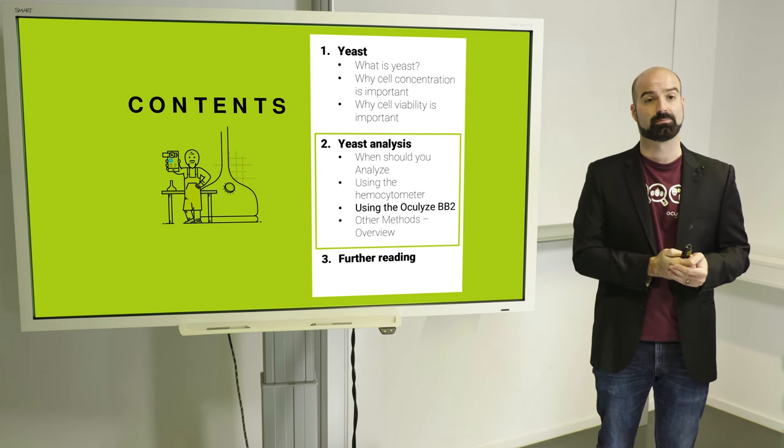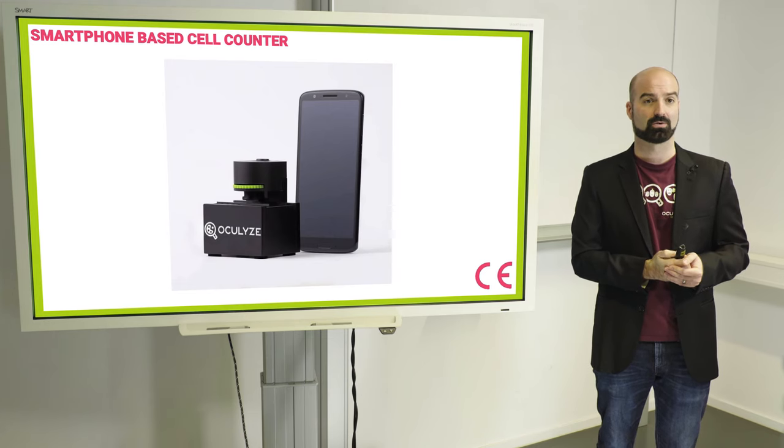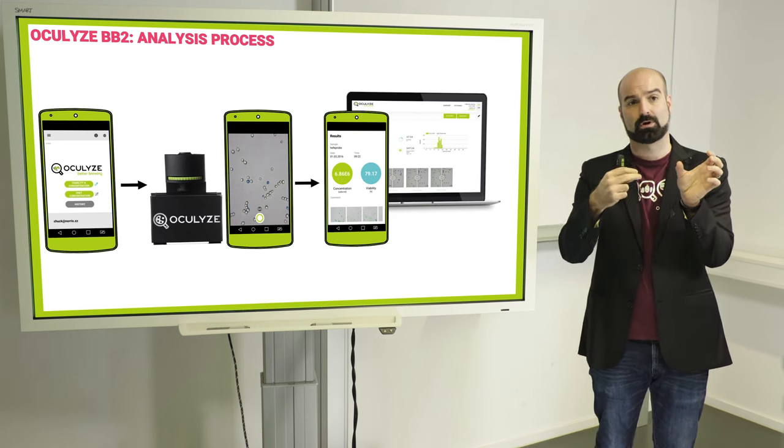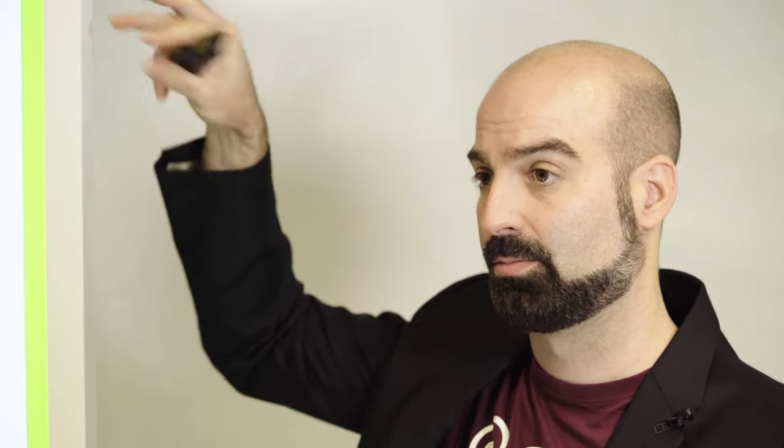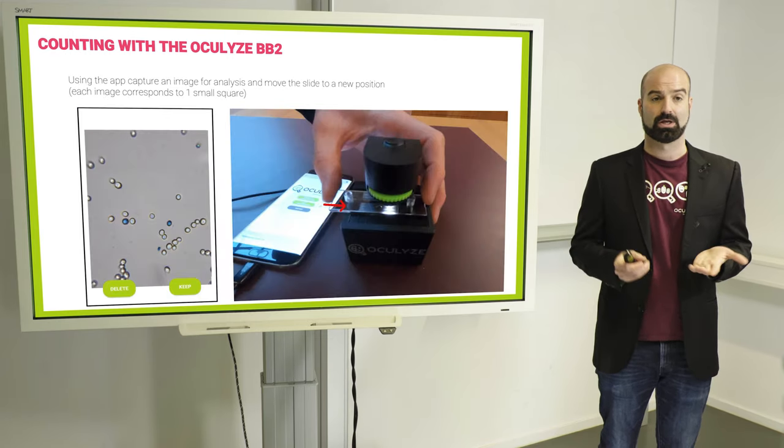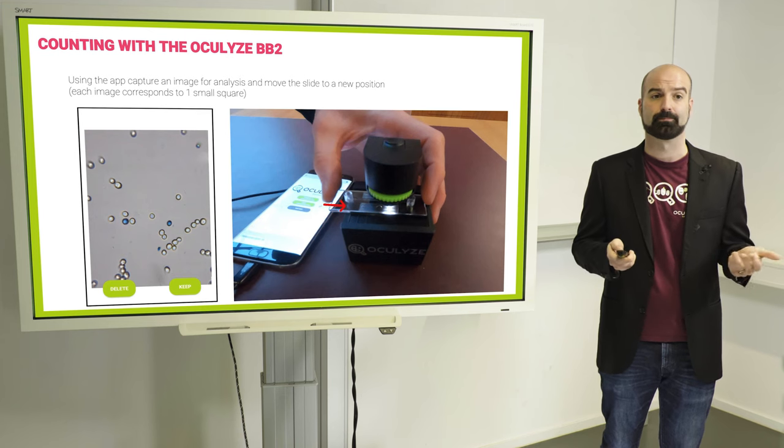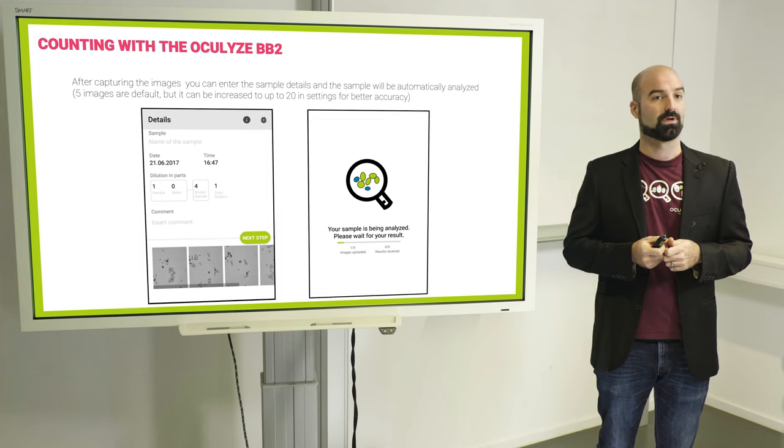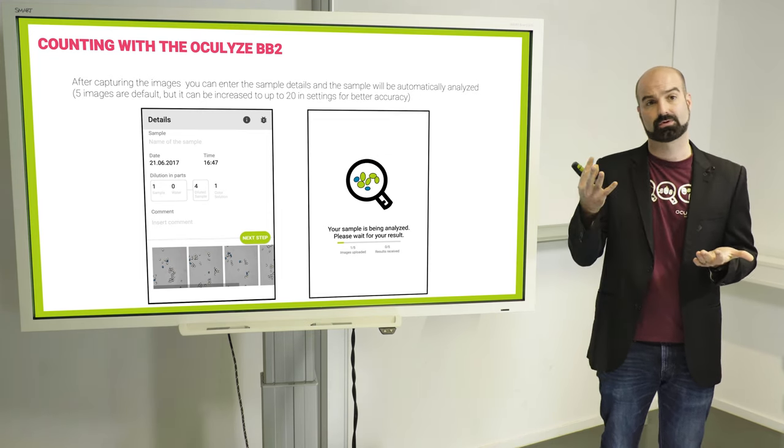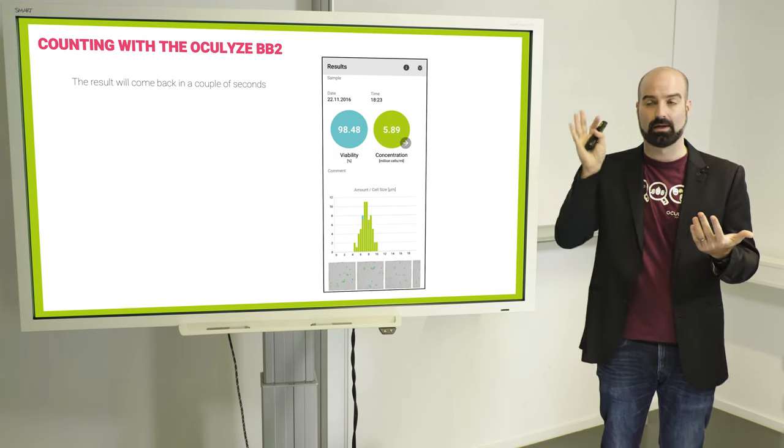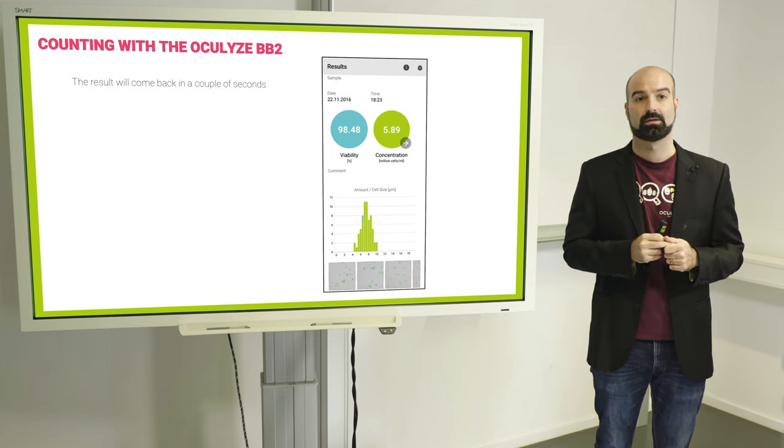Now we'll come to our own product, which is the Oculyze BV2. So this is what it looks like. Basically, it's a mobile microscope that you use with a smartphone. And the way it works is you open our app. Then you connect our smartphone. You take images. They're sent to the cloud, processed with image recognition, and then you get the results back. Or if we go step by step, first you focus the sample using a wheel. Then you get the image. And each image you take is like one of the squares on the hemocytometer. And you can take quite a few if you want, up to 20. Default is 5 like with the hemocytometer. After you're done with your images, they're sent to the server. And then it's processed in the cloud. And within a couple of seconds you will get the results back on the device.